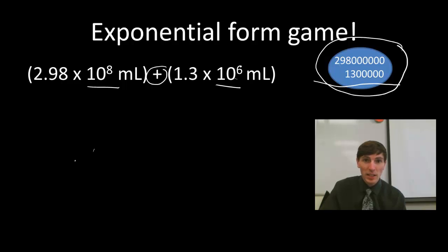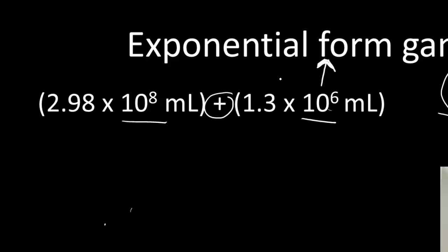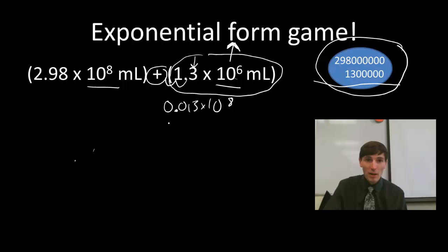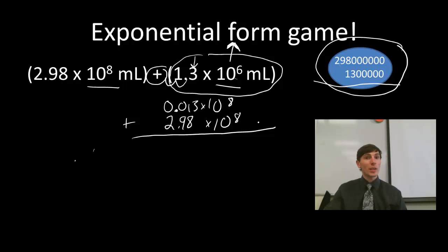Converting 10 to the 6 up to 10 to the 8 means the exponent goes up by 2 powers of 10. To keep the number the same value, the coefficient 1.3 has to go down — so I bring the decimal back two places, making it 0.013 times 10 to the 8. The opposite is also true: if you drop an exponent, the coefficient must be larger to compensate. Once both numbers share the exponent, I write 2.98 times 10 to the 8 below and can now line them up for addition.